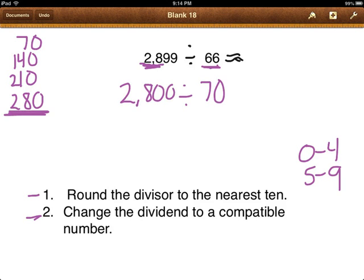Now I can divide. Whatever I do to one side, I do to the other. So I'm going to cross out 10, cross out 10. 7 goes into 28 four times. And there's one zero left over. So 2,899 divided by 66 is approximately 40.